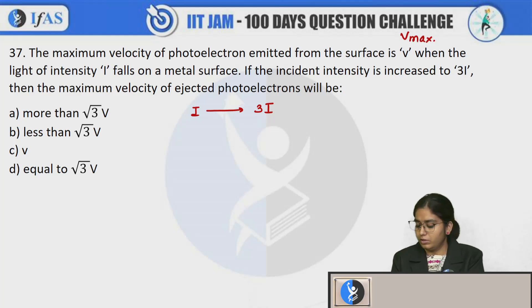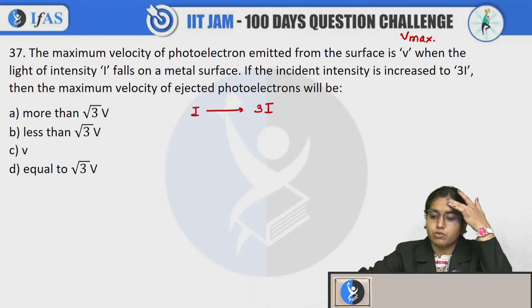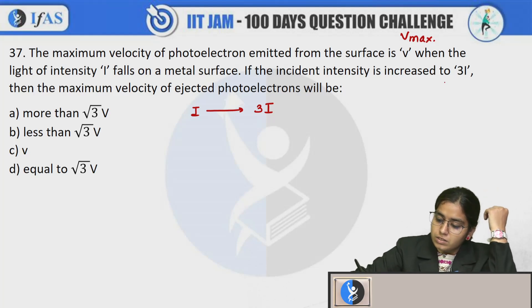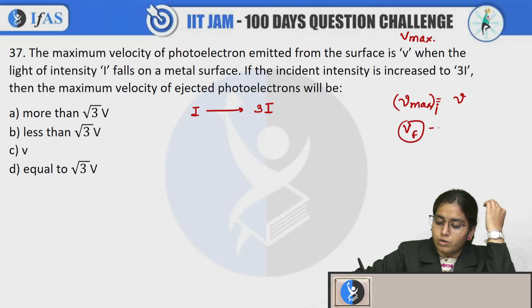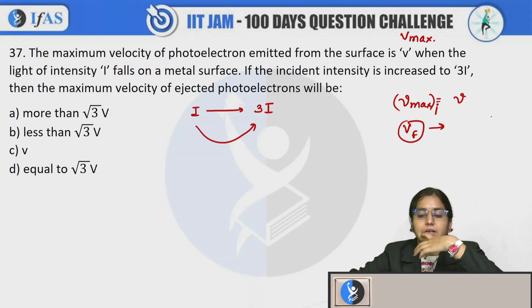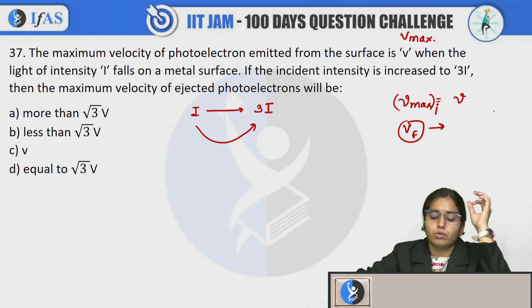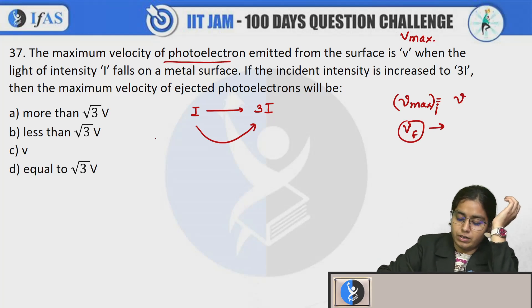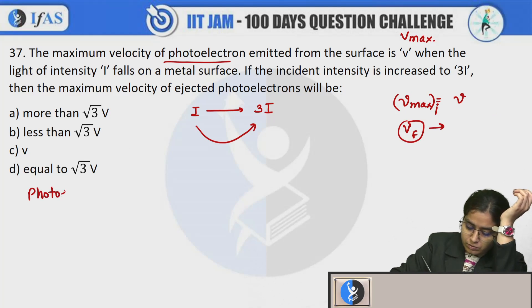Now the question is what they are asking - v max was v, this is the first initial value. So what will be v final?